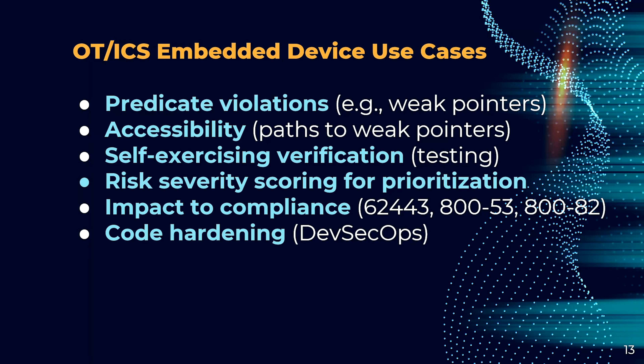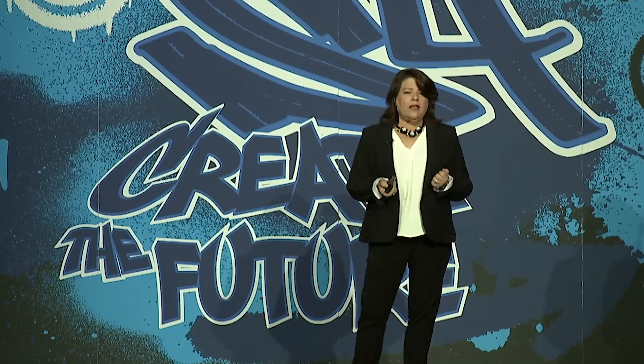The next consideration is how this impacts compliance. How many of you are working with IEC 62443? You know it has many parts: 3-3, 4-1, and 4-2. It can take a great deal of time to map your vulnerabilities to your compliance framework — and the same goes for NIST SP 800-53, 800-82, and other frameworks. What we're proposing is automatic mapping of discovered CWEs to your compliance framework.